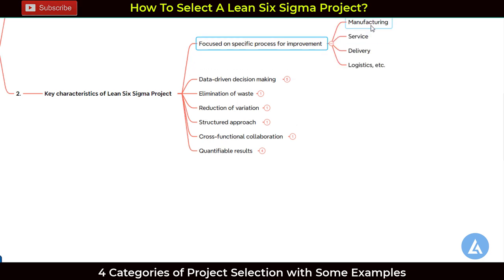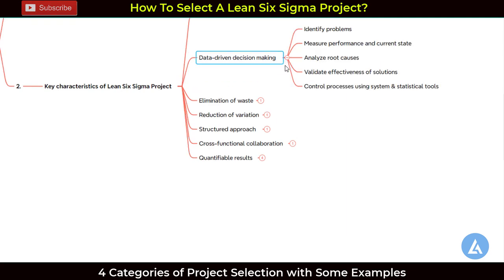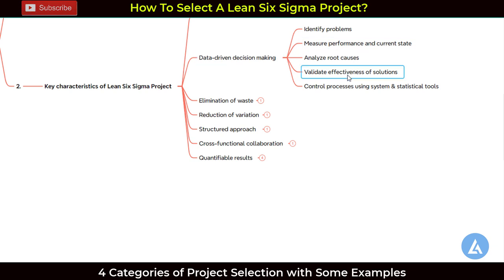This specific process can be manufacturing, service, delivery, logistics, or financial — totally depending on the need of the organization. Second, this is a data-driven decision-making process. We use data to identify problems, measure current state performance, analyze root causes, validate the effectiveness of solutions defined at the end of the analyze phase, and put controls in place using systems and statistical tools.